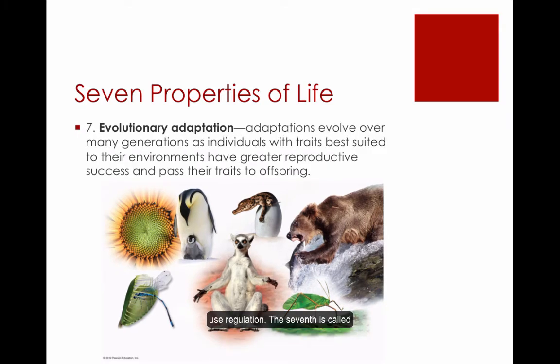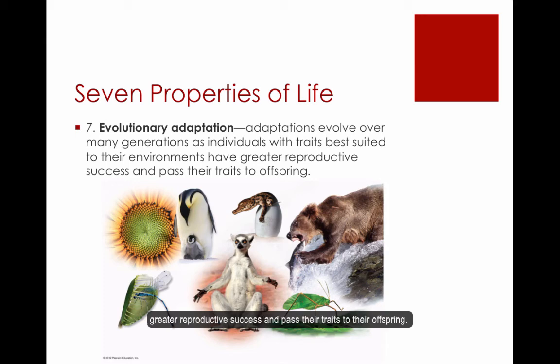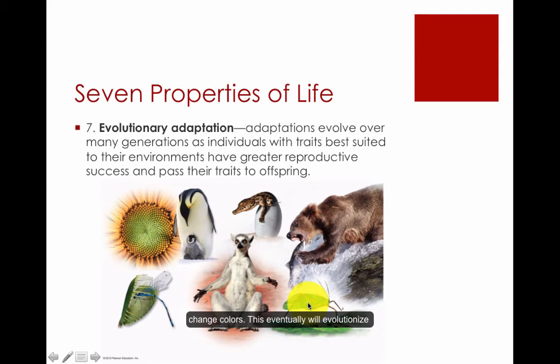The seventh property is called evolutionary adaptation. Adaptations evolve over many generations as individuals with traits best suited to their environments have greater reproductive success and pass their traits to offspring. Here we see a leaf-like appearance — just like chameleons change colors, this trait will eventually be maintained through evolution.